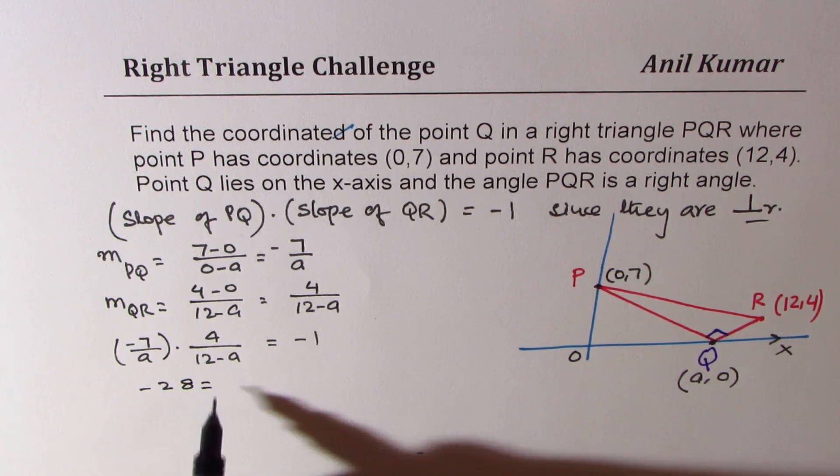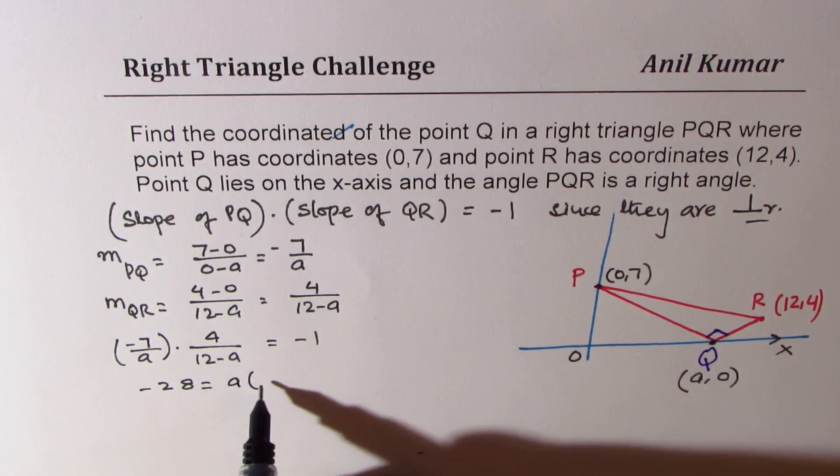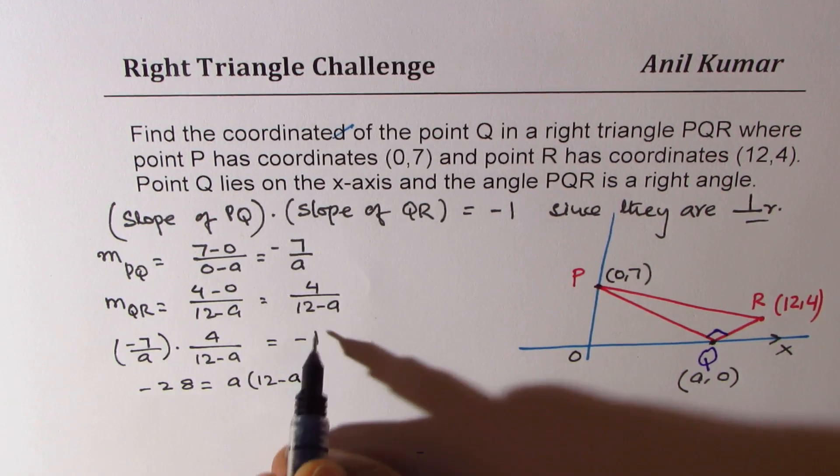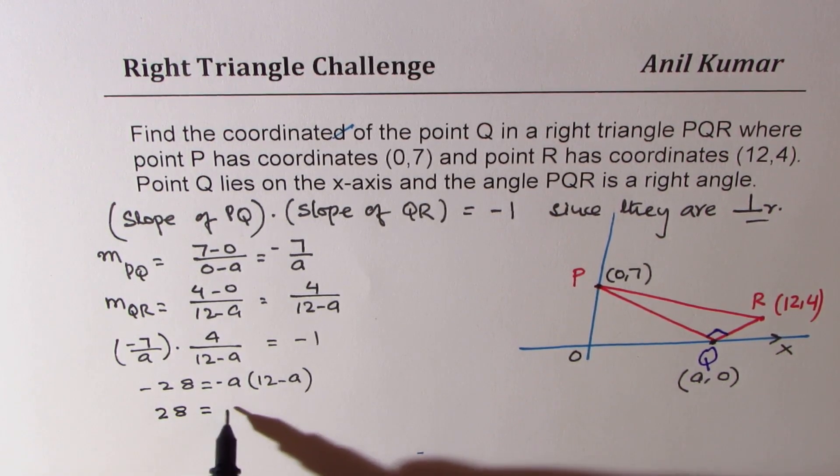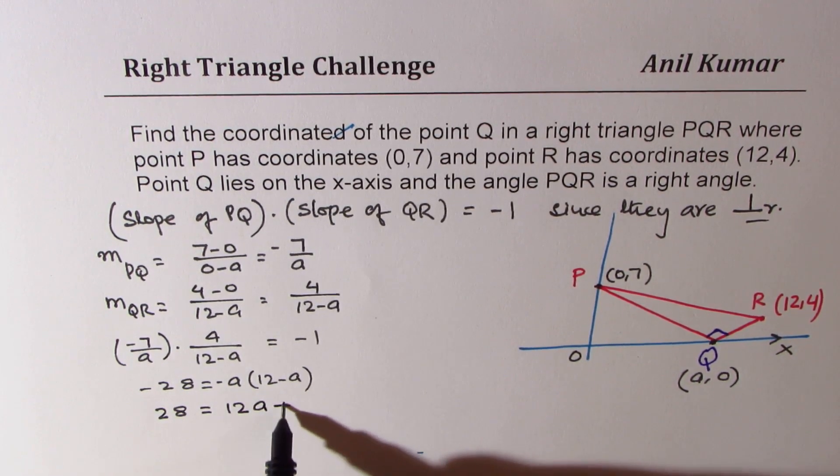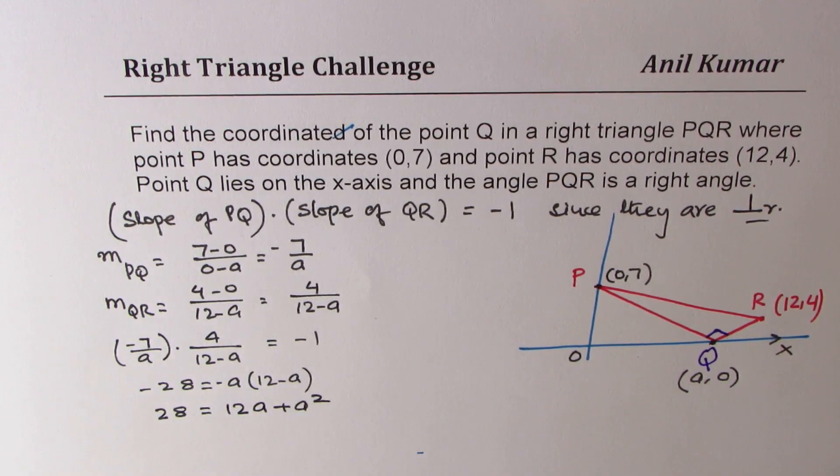So we have minus 28 equals to a times 12 minus a with a negative sign. So these two negatives, they cancel. We can open this bracket. So we have 28 equals to 12a plus a square. So now we can actually solve this equation.